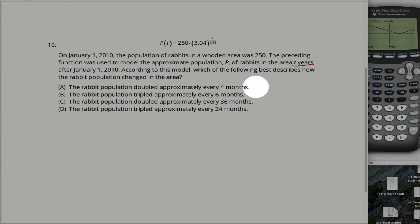So when they talk about every four months, think about t equals 4 twelfths or one third years. Whereas if it's six months, t is equal to one half. 36 months, t is equal to three. And 24 months, t is equal to two. So maybe not a bad idea to do that conversion right off the bat.